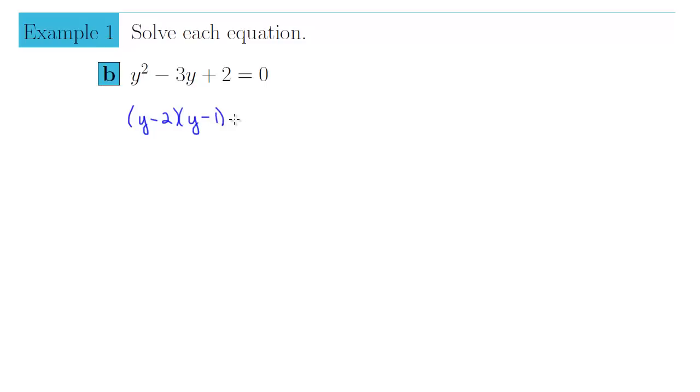You can check it. Therefore, we have y minus 2 times y minus 1 equals zero. We now have a product on the left side, and we can use the principle which tells us that y minus 2 has to be zero, or the factor y minus 1 has to be zero.